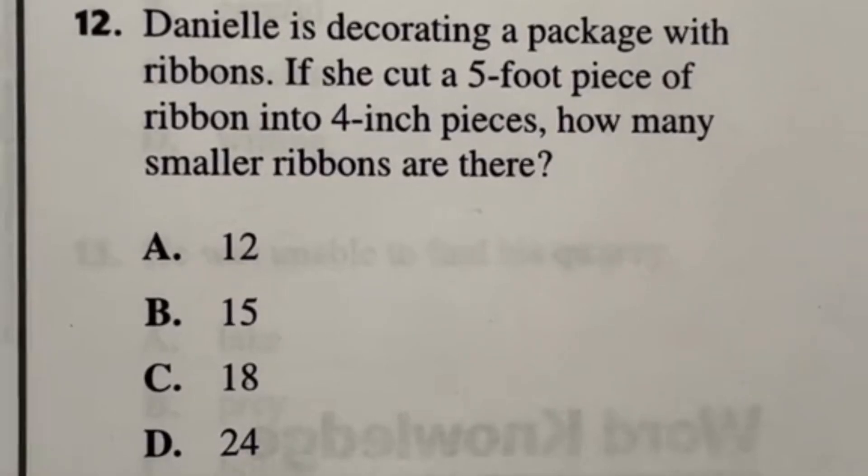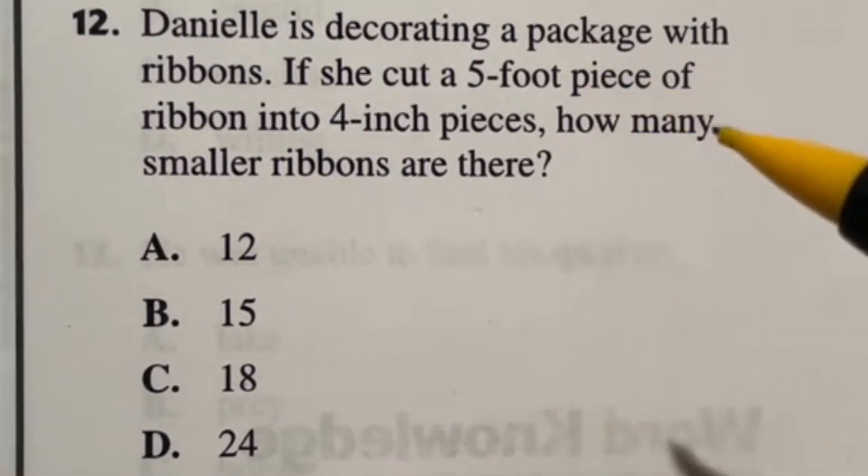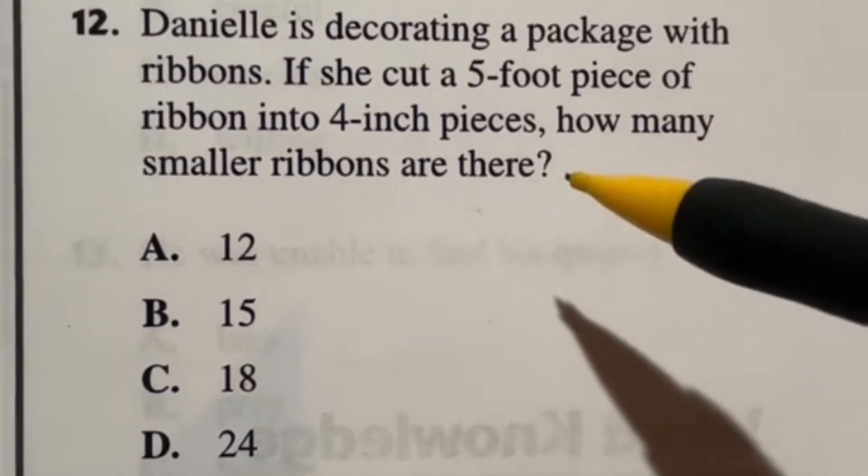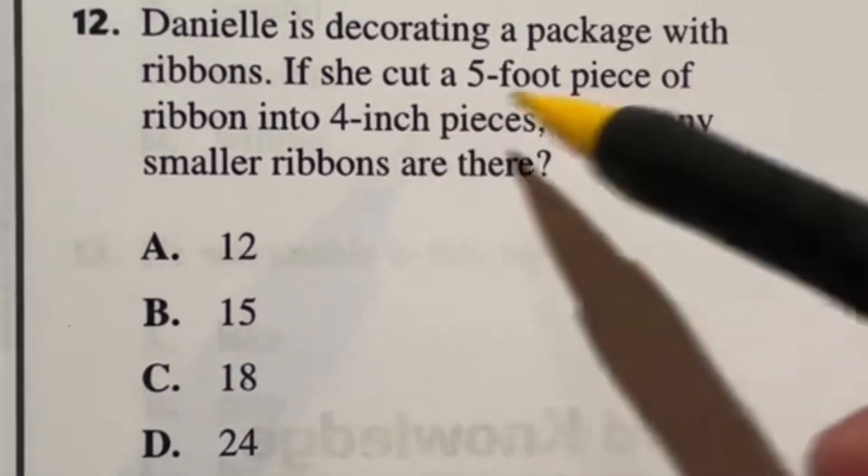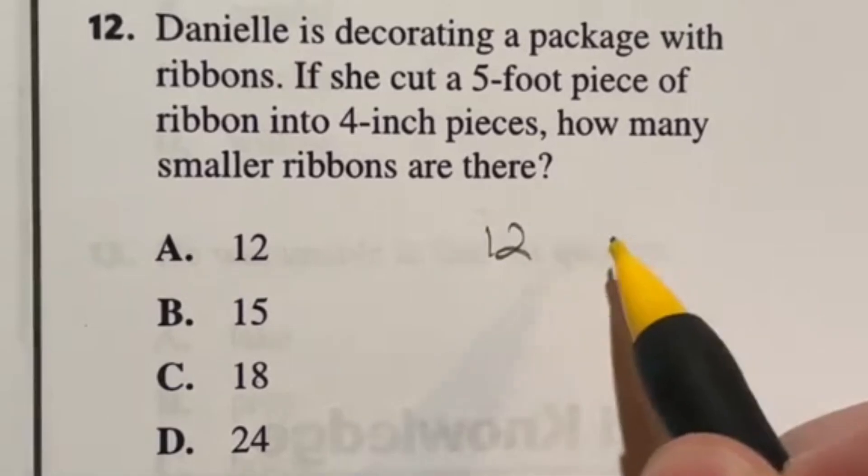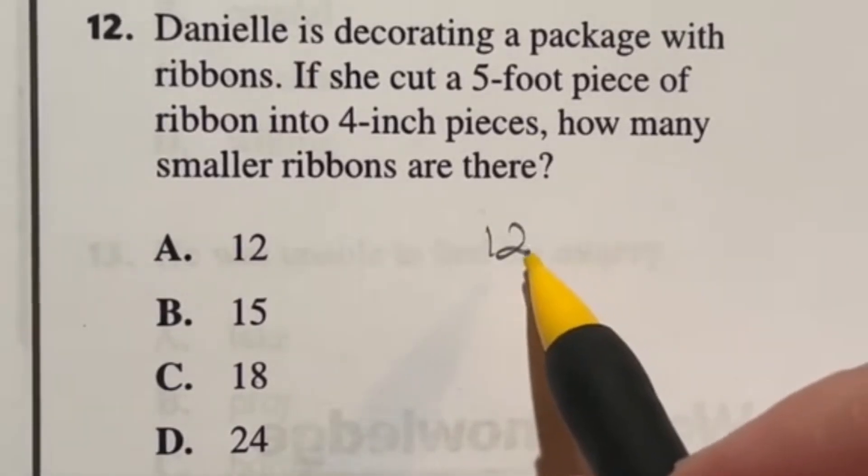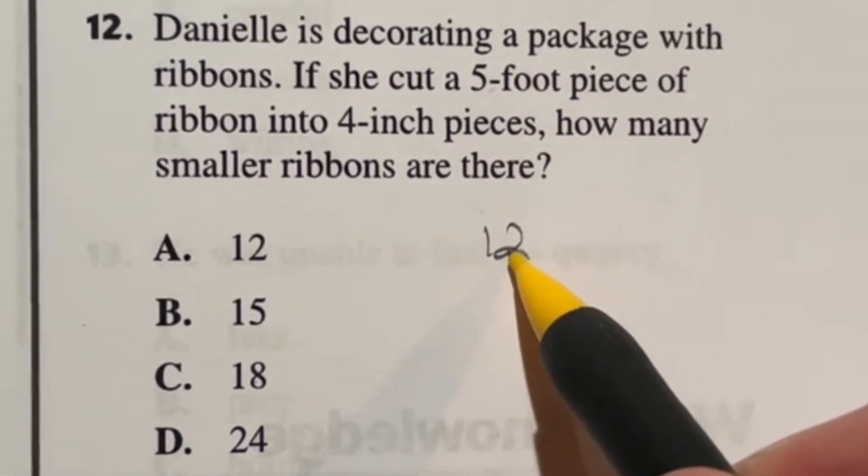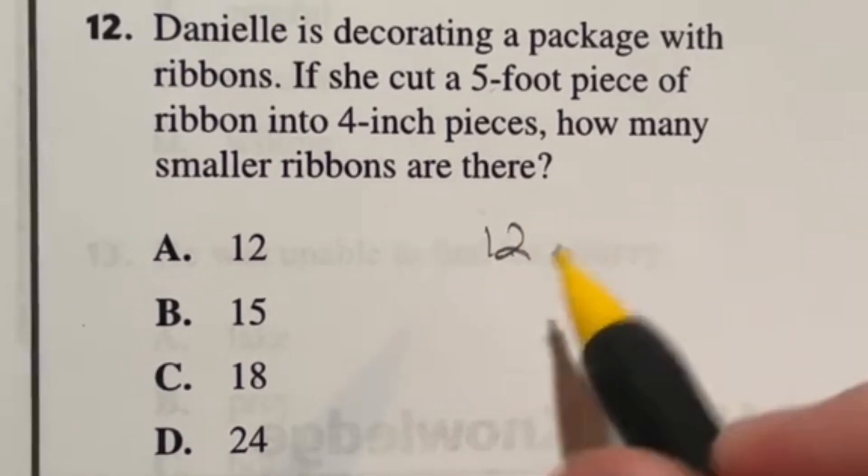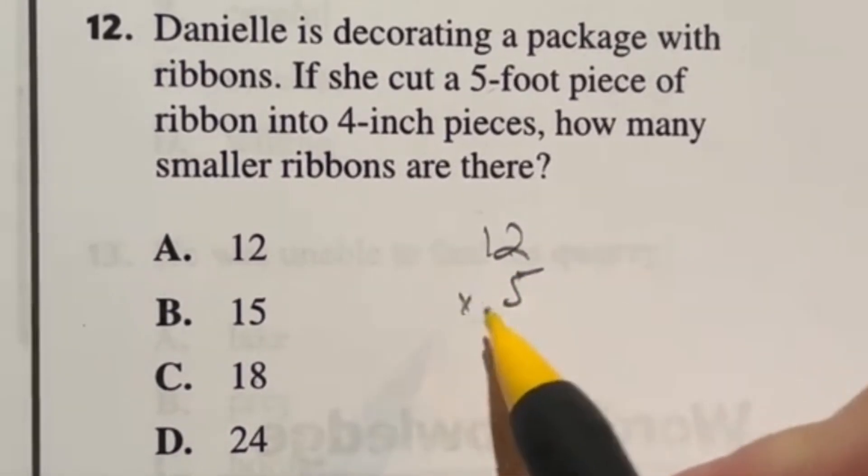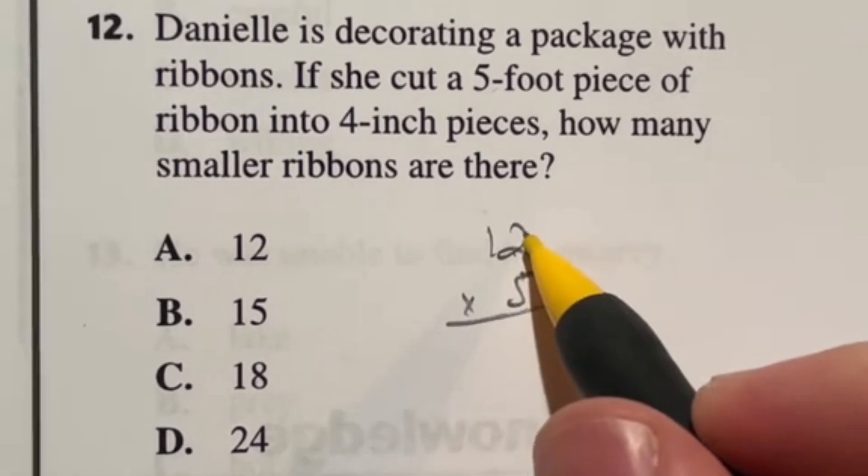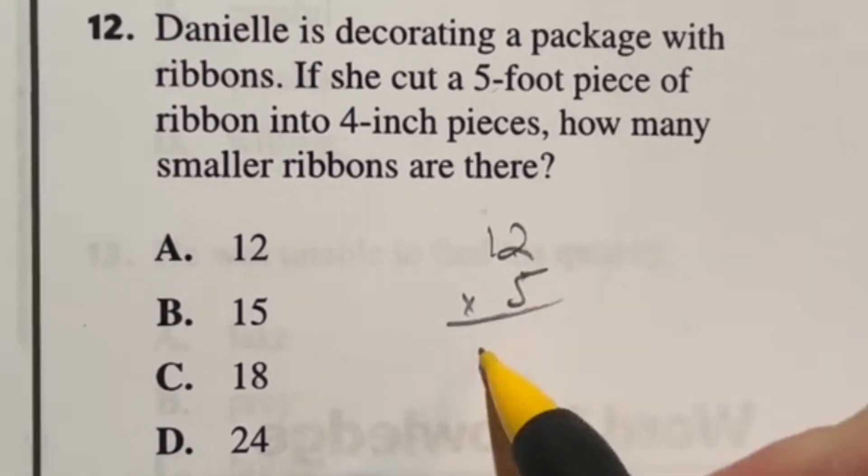For number 12 it says that Danielle is decorating a package with ribbons. If she cuts a five foot piece of ribbon into four inch pieces, how many smaller ribbons are there? Well first off let's keep in mind how many inches are in a foot. There are 12 inches in a foot. So if I have 5 feet I'm going to do 5 times 12 to find my total number of inches. 12 times 5, 5 times 10 is 50, 5 times 2 is another 10. So 50 plus 10 gives us a total of 60.